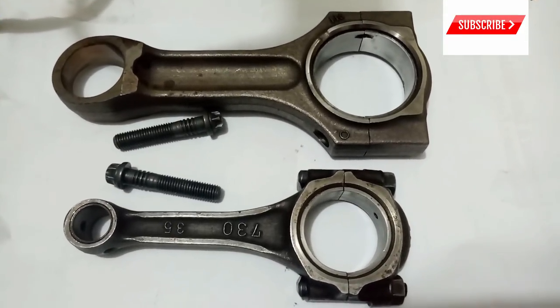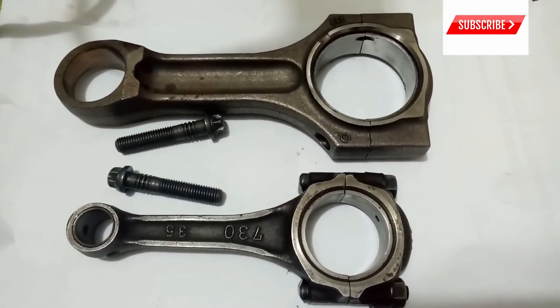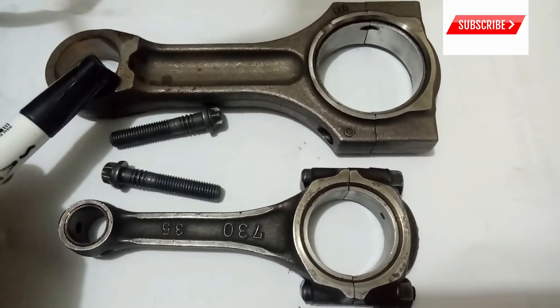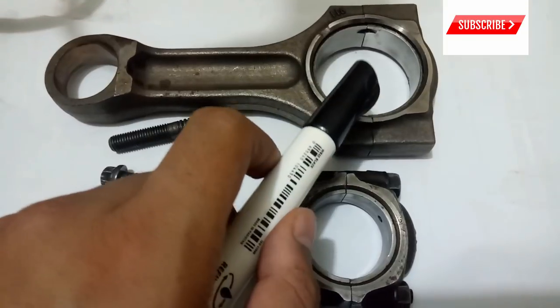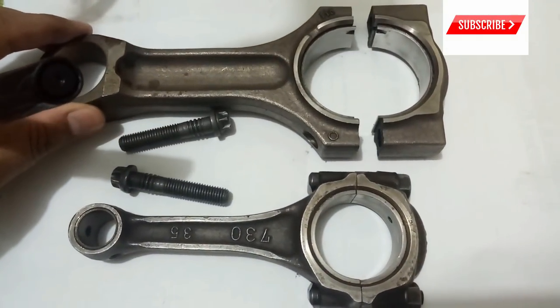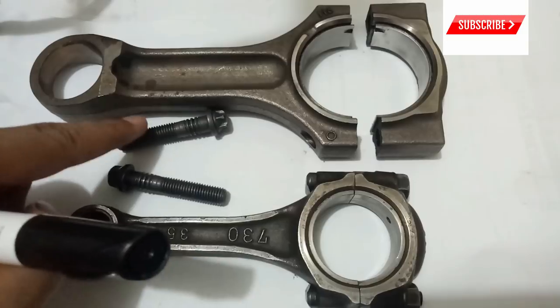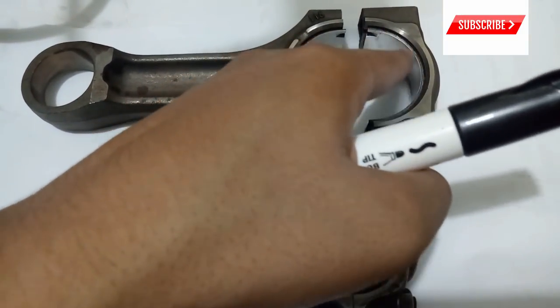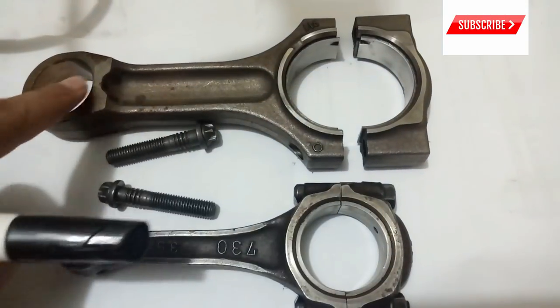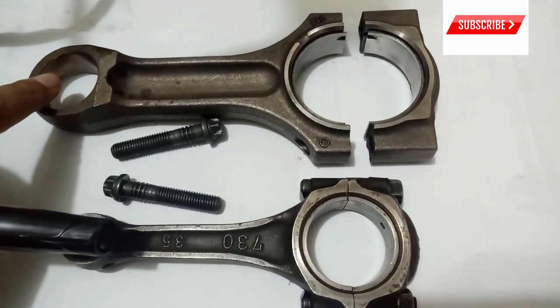Here I have two different connecting rods. You can see the smaller end, then there is a shank, and then there is a bigger end. This bigger end is further divided into two parts connected with these two bolts. Also, you can see the bearing surfaces in the bigger end and in the smaller end respectively.